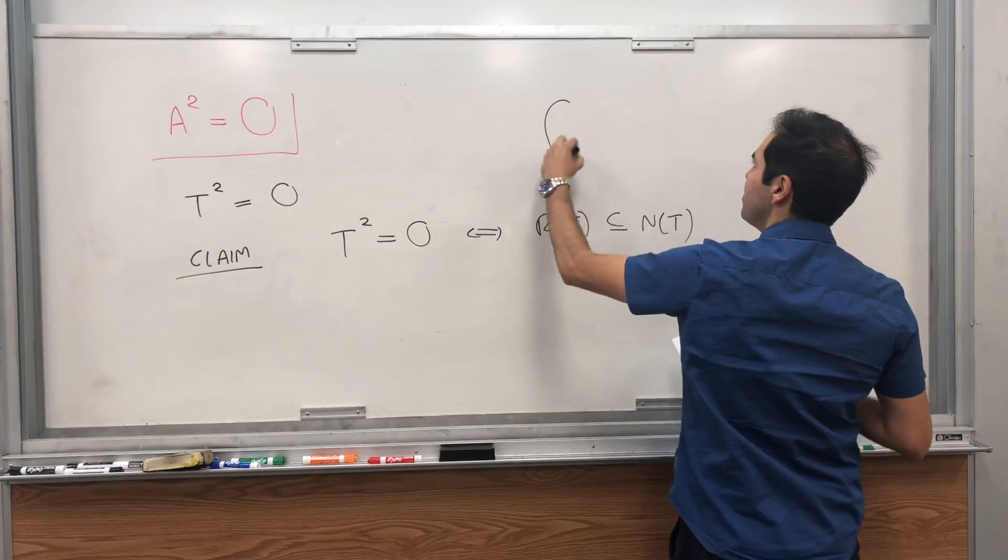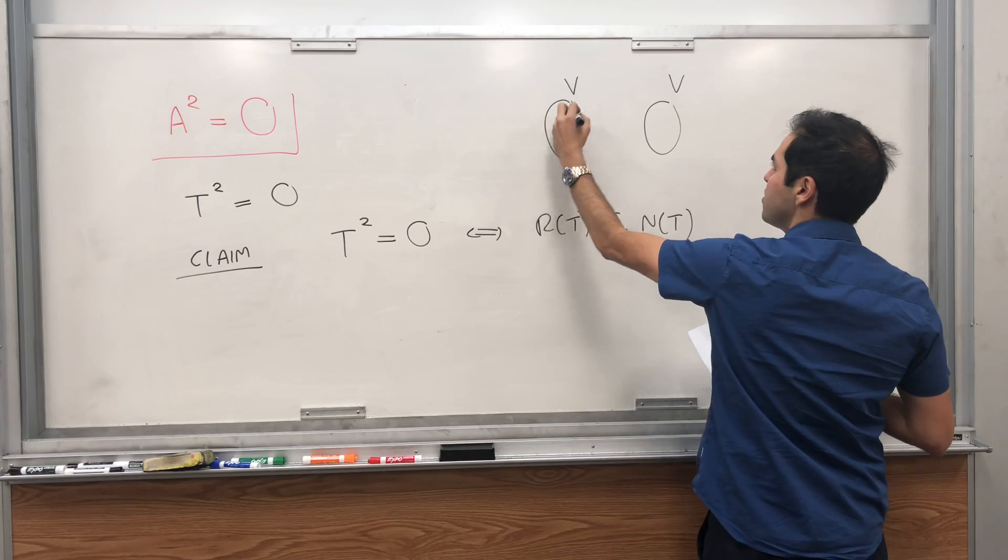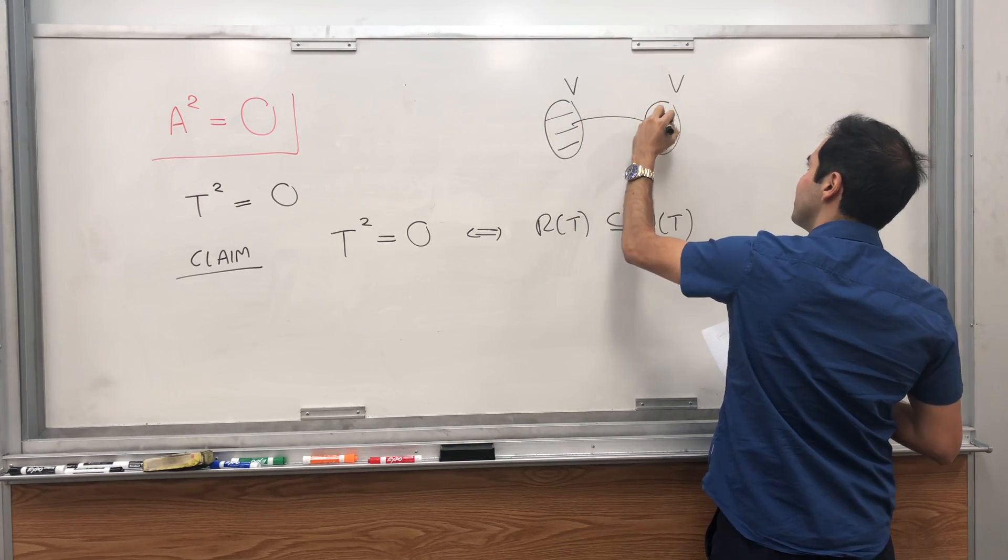the range of T is included in the null space of T. So what does that mean? We have a linear operator, if you want, from V to V, well, it takes V and spits it to the range of T.